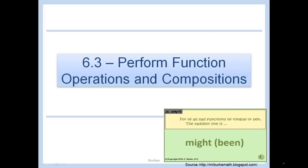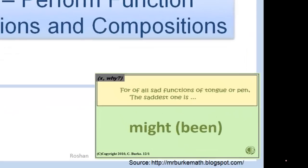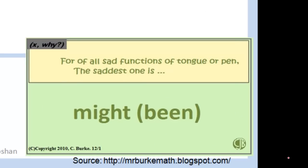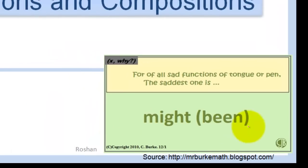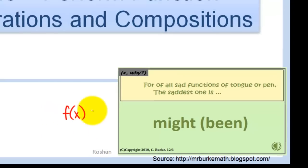6.3: Perform function operations and compositions. For of all set functions of tongue or pen, the saddest one is 'might have been.' And of course I'm reading this 'might have been' just like I would read f of x.